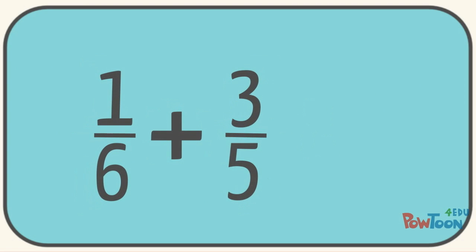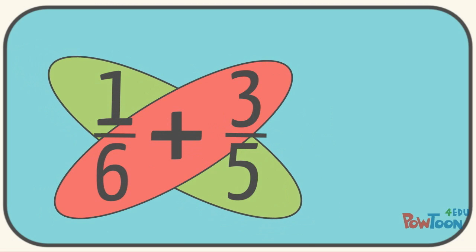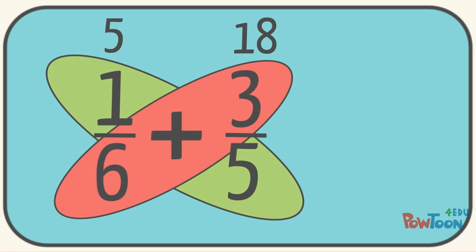In this case, we have 1 sixth plus 3 fifths. We're going to do the cross multiplication method here. So we'll set it up and we'll take 1 times 5 to give us 5 and 6 times 3 to give us 18. Now we'll multiply the denominator. 6 times 5 is 30.